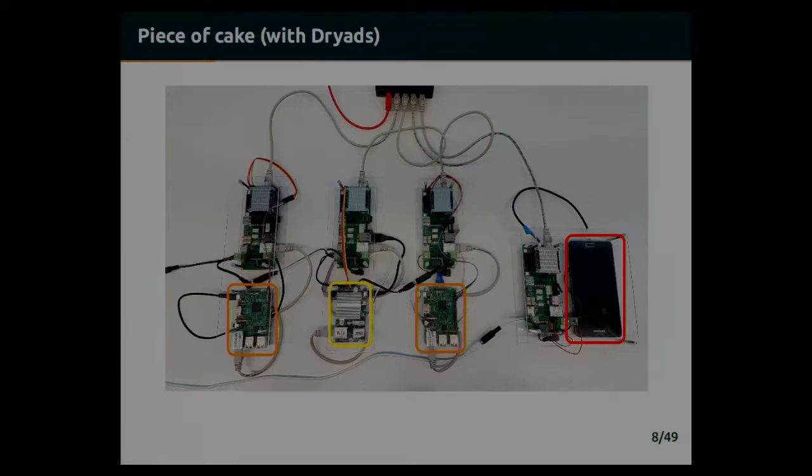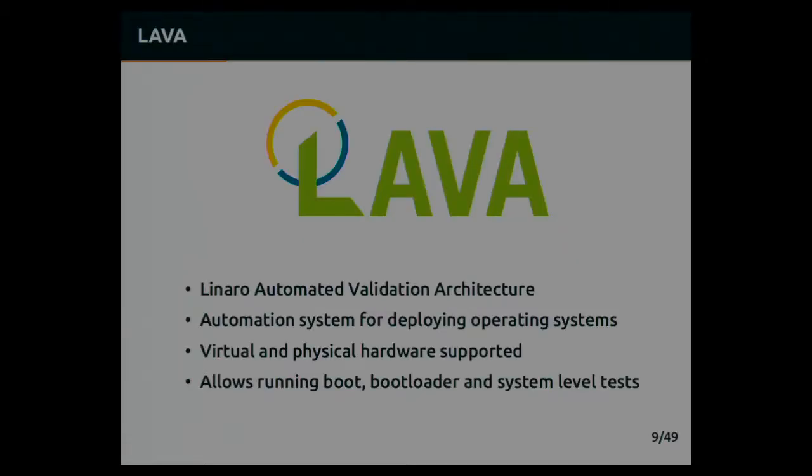That's why we came up with this device—it's MuxPi—and it needs only two interfaces: power supply and ethernet for network connection. Once connected to the target device, such as Raspberry Pi 3 right here, it is already ready to use, and as you might suspect, it's pretty easy to scale because it needs only two interfaces.